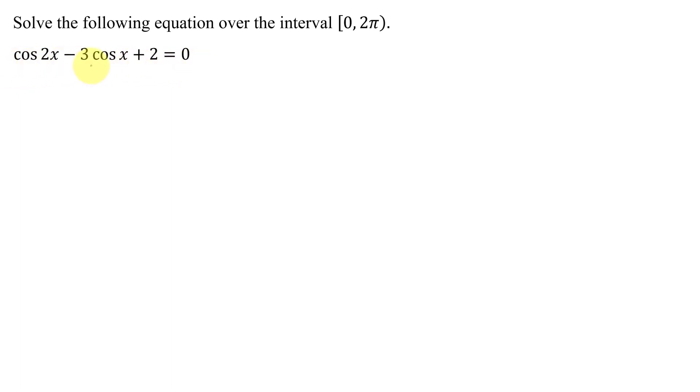It's a trigonometric equation, and it only has one trig function in it, the cosine function, but unfortunately the argument of the first cosine function is 2x, and the argument of the second one is x. So the first thing I'm going to have to do is use an identity to rewrite the cosine of 2x in terms of trig functions of just the argument x.